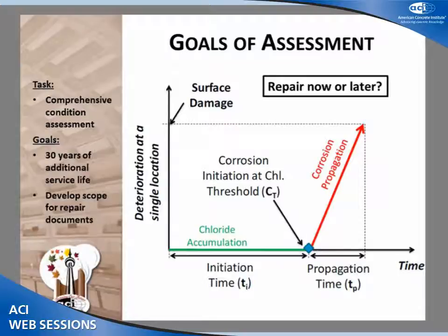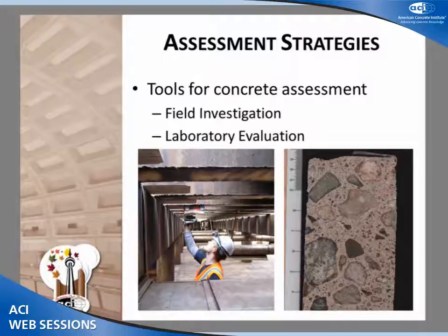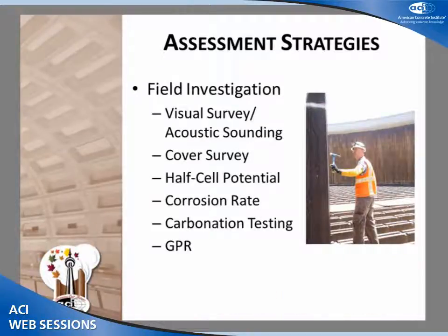We know we have a source of chlorides. The influent water in that trickling filter has roughly 200 milligrams per liter of chloride — not a lot, but a moderate source — and over time certainly enough to accumulate and cause corrosion. The question is where we are on the damage progression plot. Some areas already had surface damage; others may already have corrosion propagating. Our main tools are separated into field investigation and laboratory evaluation, and the key is to work those together in concert.